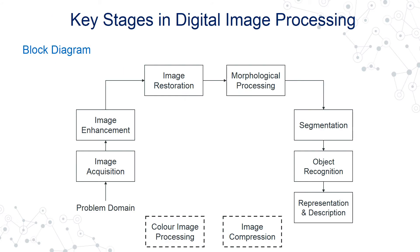The key stages in digital image processing start with problem identification, then acquiring the image via a camera sensor or the human eye. Depending on the information acquired, we might apply suitable image enhancement techniques to extract or enhance the information contained in the image. We may also restore the image for denoising, deblurring, and removal of degradations. Morphological image processing is required to extract the shape of image components, like boundary skeletons and edges.